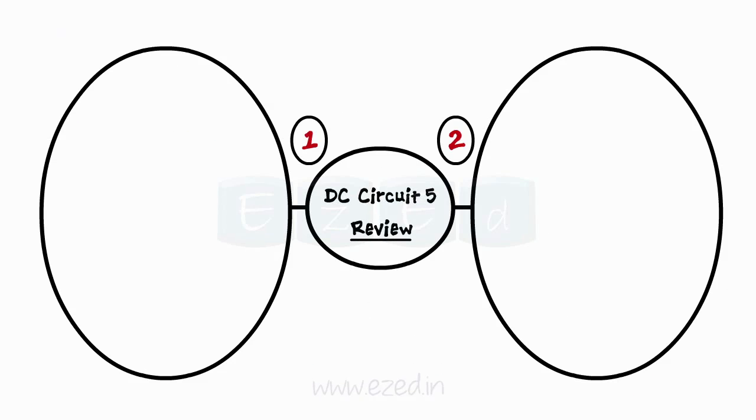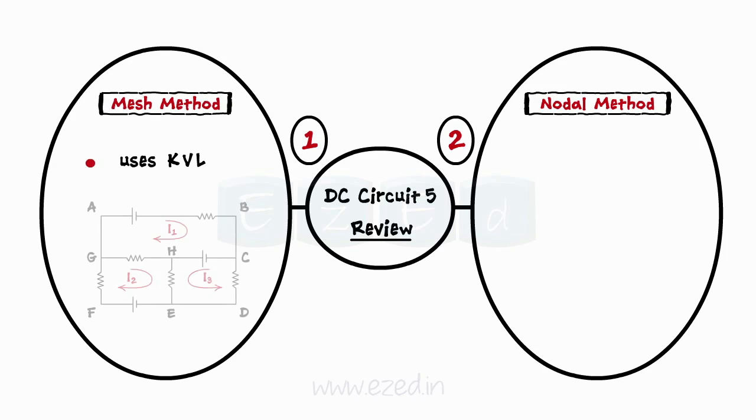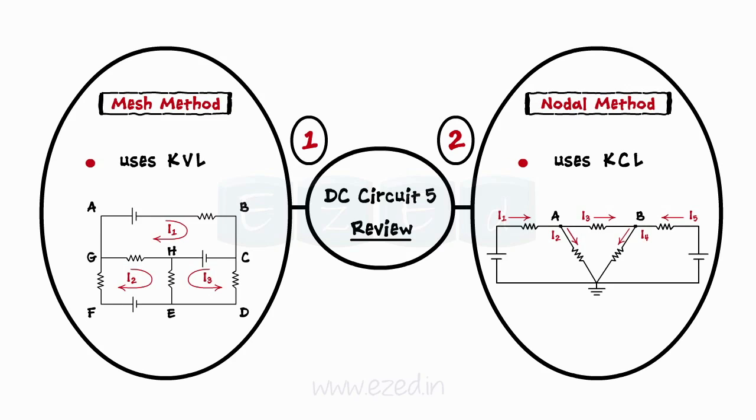Let's see what we've learnt in this chapter. Mesh and nodal are two methods to find branch currents in any electrical network. Mesh method uses KVL, whereas nodal method uses KCL to find the branch currents.